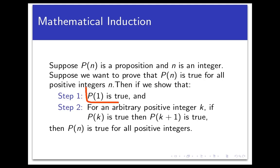First of all, we're going to prove that P(1) is true. That's just an example. And then we're going to move on and prove that for an arbitrary positive integer k, if P(k) is true, then P(k+1) is true. If we can do those two things, then P(n) is true for all positive integers.